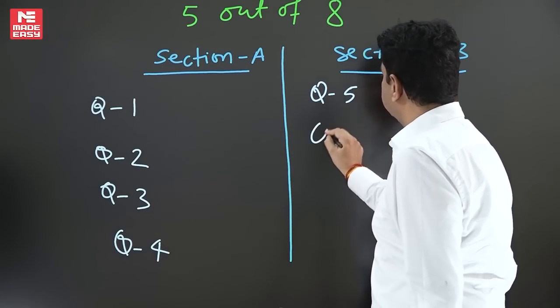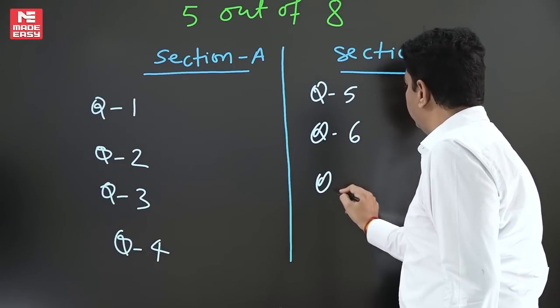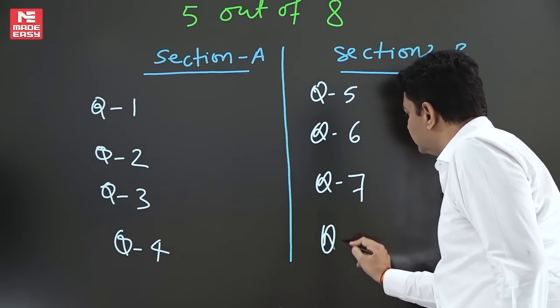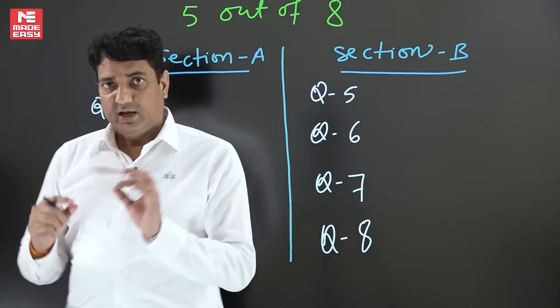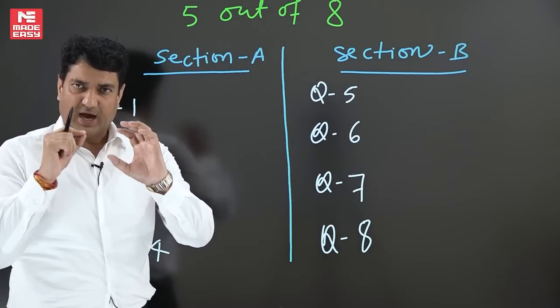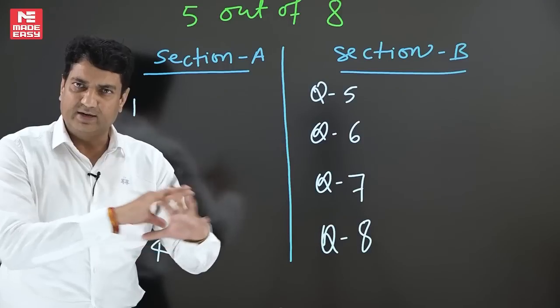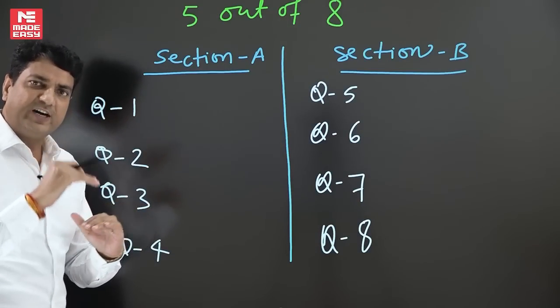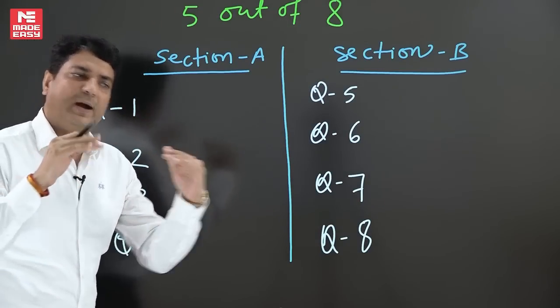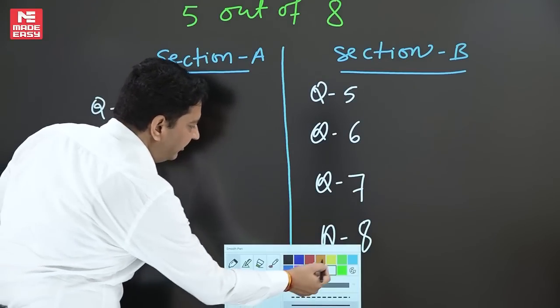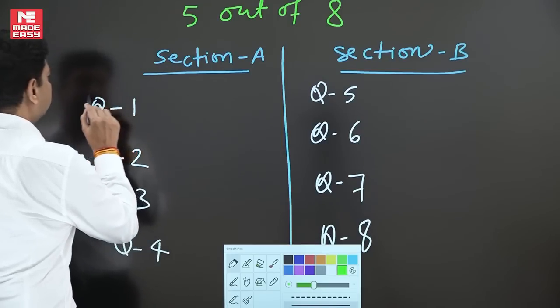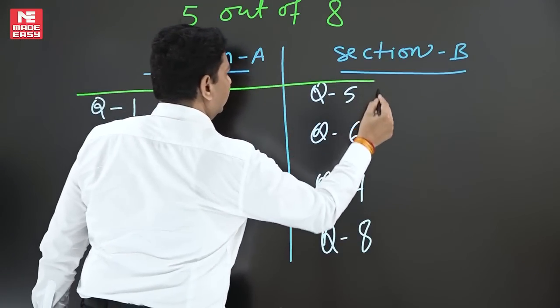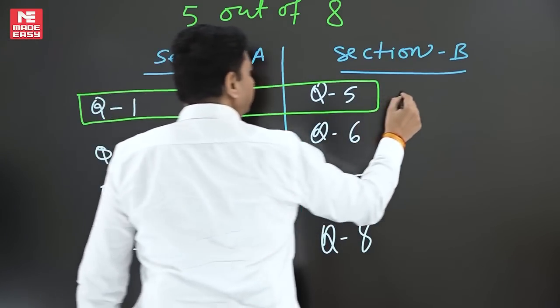Question number five, question number six, question number seven, question number eight are in second Section B. If the instructions are same like last year pattern, first and fifth question will be compulsory. So these two questions are compulsory - question number one and question number five.